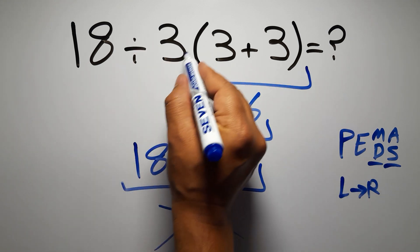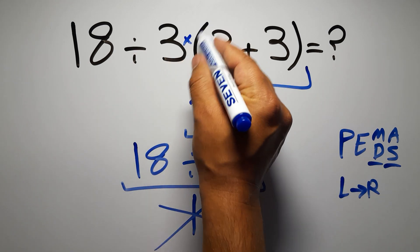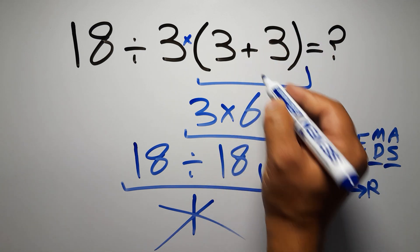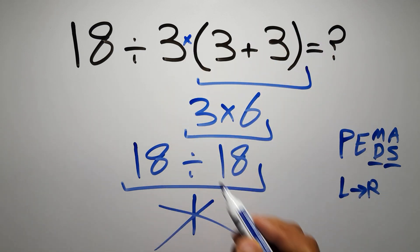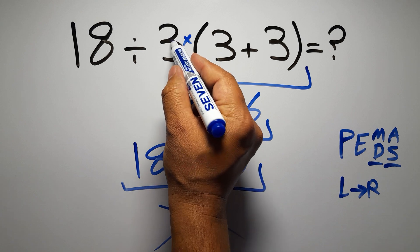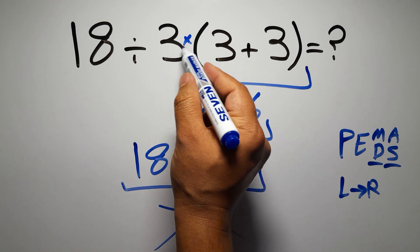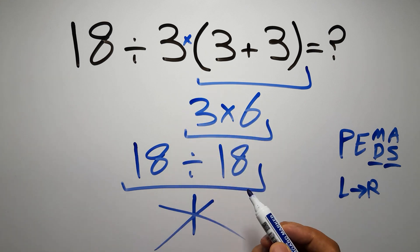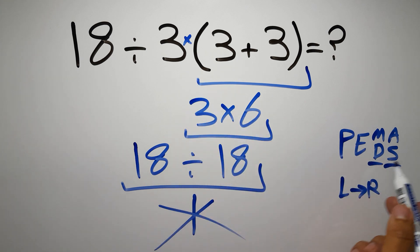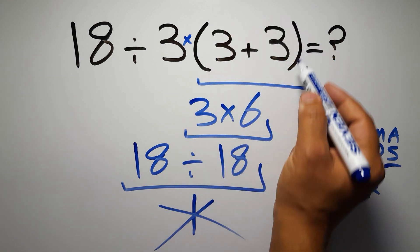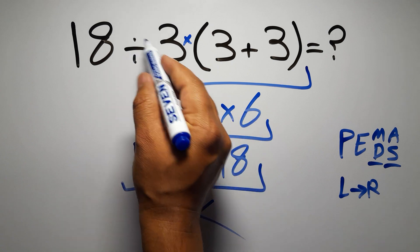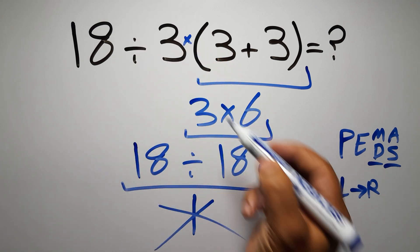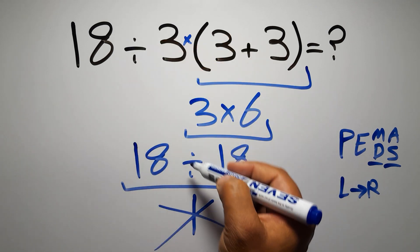In this expression we have one division, one multiplication, and one set of parentheses. Inside the parentheses we have one addition. We also have a multiplication because in mathematics when a number is placed next to parentheses it means multiplication, and we usually don't write the multiplication sign for brevity. So according to PEMDAS, first we do the parentheses, then the division, and finally the multiplication. Doing the multiplication before the division would be wrong.